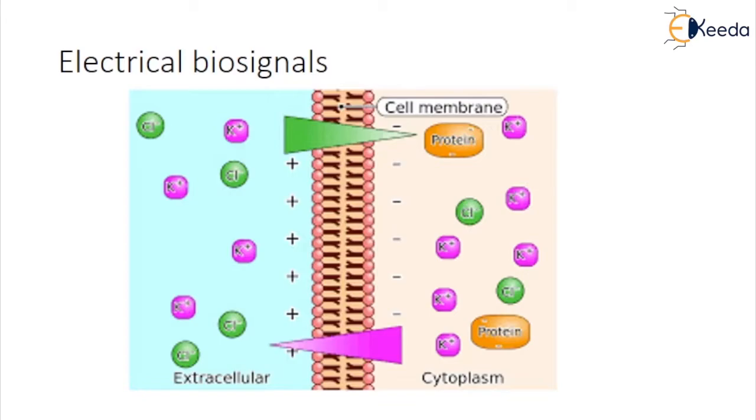Electrical Activity is the study of the electrical properties of biological cells, tissues and organs. It includes measurement of change in voltage or electric current on a far ranging variety of scales from single ion channel proteins to entire organs like the heart.